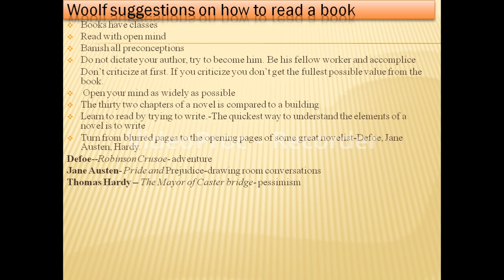In Defoe's novels you see ocean and open air. When you look at Jane Austen's Pride and Prejudice, there are drawing room conversations — her world is a domestic world. She draws her characters from real life; the main theme of her novels is matrimony. Love, parties, weddings, dances, and drawing room conversations are the main ingredients of her novels. Daniel Defoe and Jane Austen are completely different: if open air and adventure mean everything to Defoe, they mean nothing to Jane Austen. Their worlds are different — what is important to Defoe is not at all important to Jane Austen.